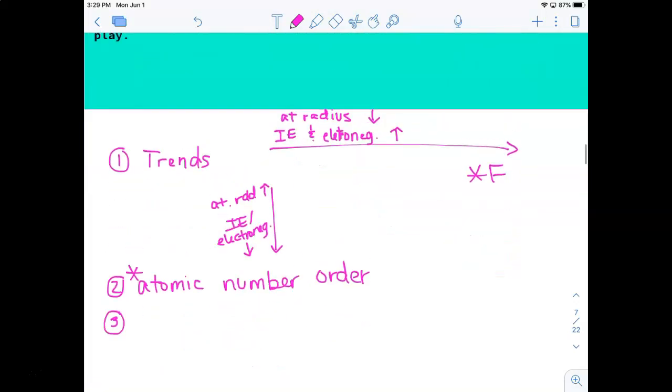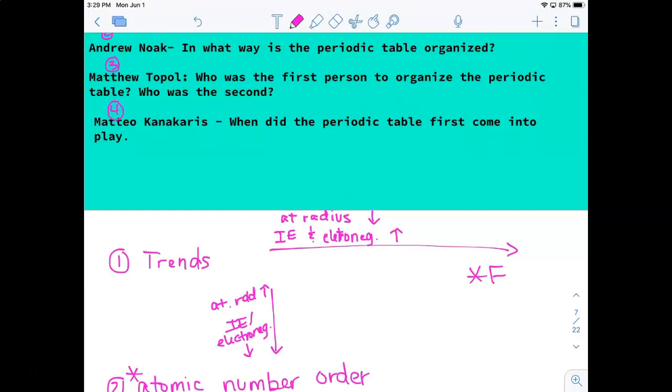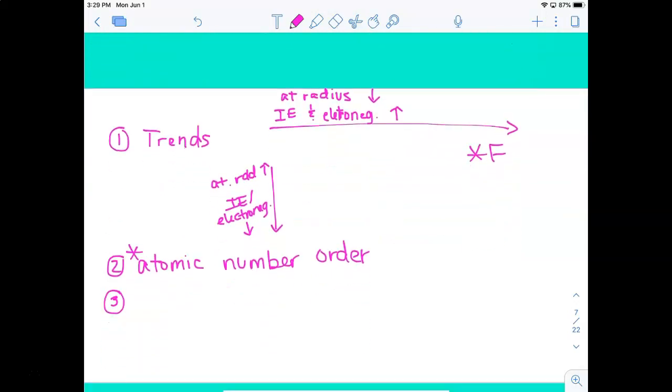Don't make the mistake of saying that it's organized by mass. The mass does increase as you go left to right and top to bottom, but there are some exceptions to that, so this is what you want to go with. This kind of goes with Matt's question, which is next. He wants to know who the people are that organized the periodic table. So the first guy, his name was Mendeleev, and he organized it by mass.